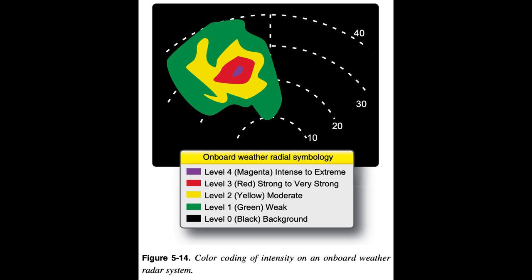Ground Weather Surveillance Radar. Ground weather surveillance integrates weather information from many ground radar stations. The weather information collected from many sources is then used to create a composite picture that covers large volumes of airspace. These composite radar images can then be transmitted to aircraft equipped with weather data receivers.